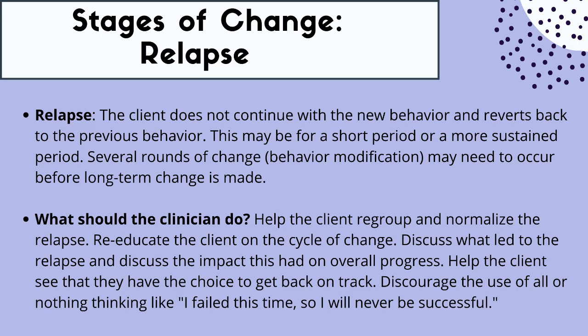What can we do as a clinician? Be really supportive: help the client regroup and normalize the relapse. Re-educate the client on the cycle of change. Discuss what led to the relapse — maybe it was illness, stress, or negative influences — and discuss how that affected their overall progress. Help the client see that they have the choice to get back on track, but don't force them back into behavior change. Discourage all-or-nothing thinking and shame — just because you had one setback doesn't mean you'll never be successful. We want to reframe that and really help them focus on the positives, working from a strengths-based approach.